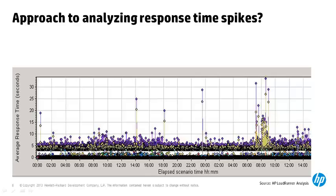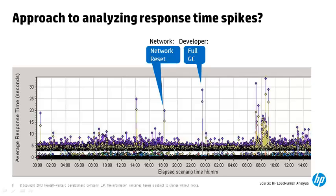A Java developer may look at his own application log and see that one spike was caused by a full application garbage collection that stops the process briefly. Occasional network resets go unnoticed because the network team didn't know about transaction response times, and developers assumed the network just works.